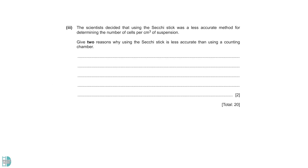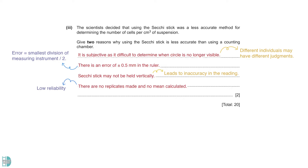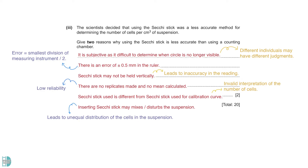D3: Give two reasons why using the circuit stick is less accurate than using a counting chamber. The measurement using a circuit stick is subjective, as it is difficult to determine when the circle is no longer visible; different individuals may have different judgements. Secondly, there is an error of ±0.5 mm in the ruler. Error is calculated by the smallest division of a measuring instrument divided by 2. It may be difficult to hold the circuit stick vertically; the incorrect positioning will lead to inaccuracy. There are no replicates made and no mean value calculated, causing low reliability. The circuit stick used may differ from the one used for the calibration curve, resulting in invalid interpretation. Lastly, inserting a circuit stick may disturb the suspension, leading to an unequal distribution of cells.